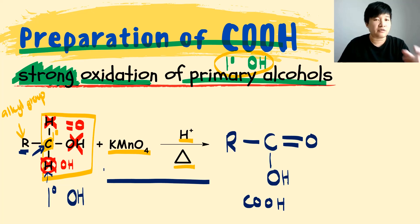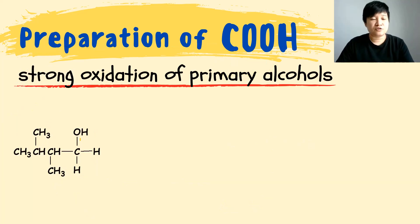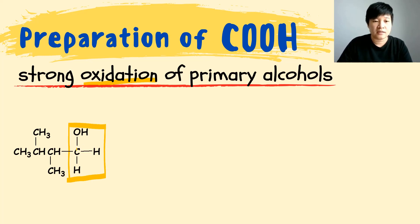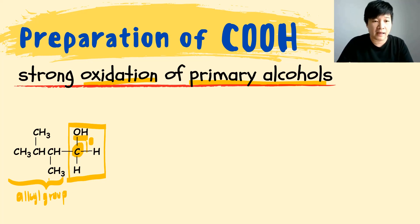We always focus on the carbonyl carbon — the carbon holding the OH group — and only primary alcohol can undergo strong oxidation to become carboxylic acid. In this example, the carbon holding the OH is a primary carbon, therefore it's a primary alcohol. This entire group is your alkyl group, which is your R group that will have no changes and you will just copy back later on.